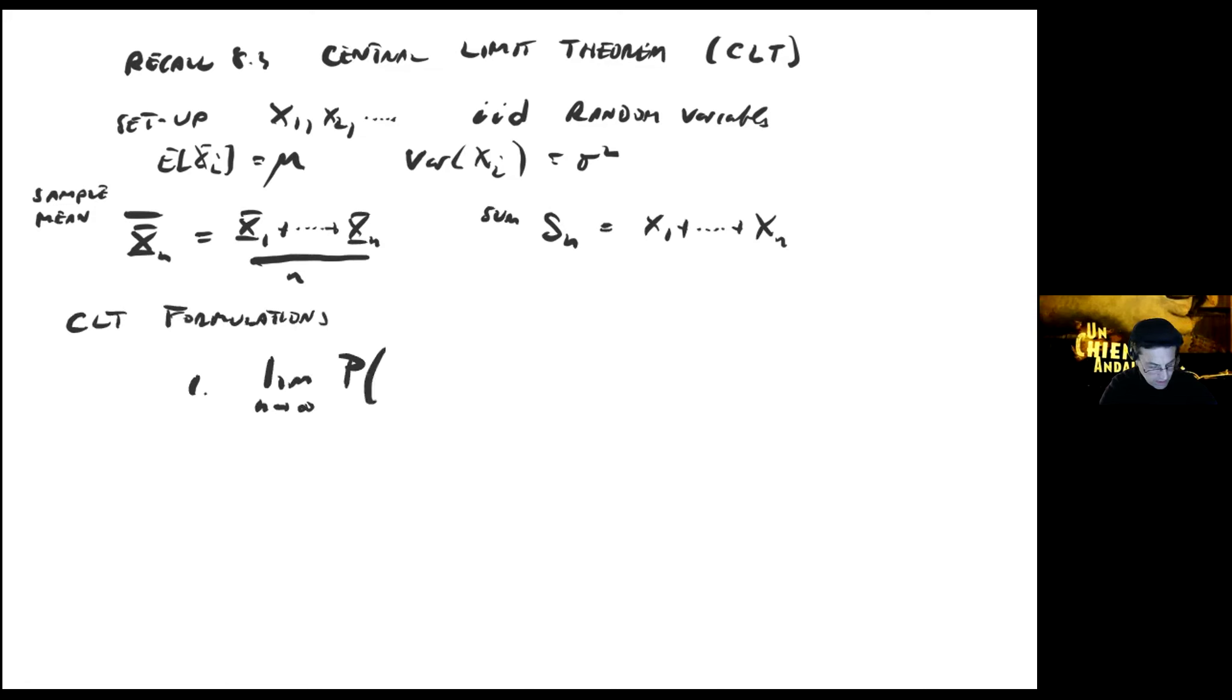The first way to formulate it, which is the way we formulated it initially last time, is if we take the limit as n goes to infinity of the probability of (Sₙ - nμ)/(σ√n) ≤ a. Let a be any positive real number. We look at how far this normalized sum is less than or equal to a, and that in the limit is given by Φ(a), where Φ is the CDF of N(0,1).